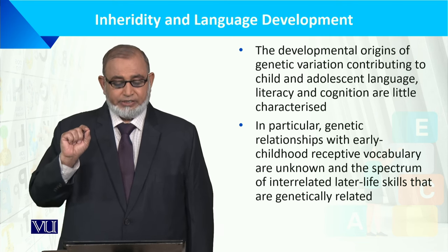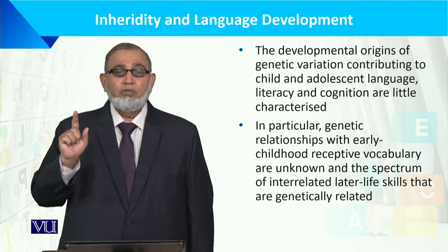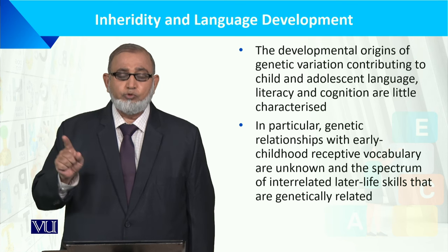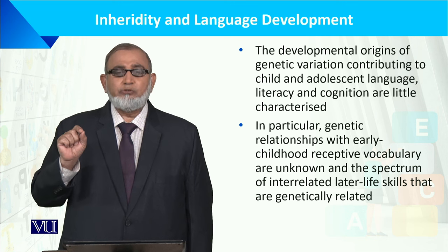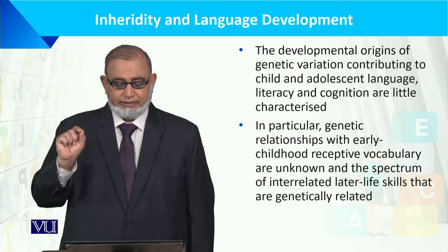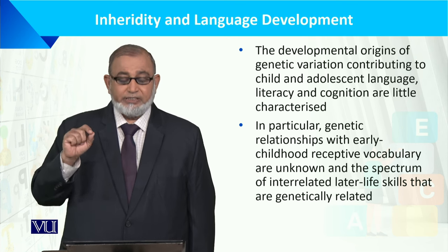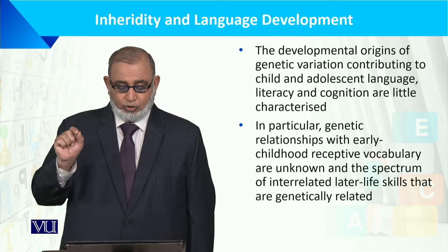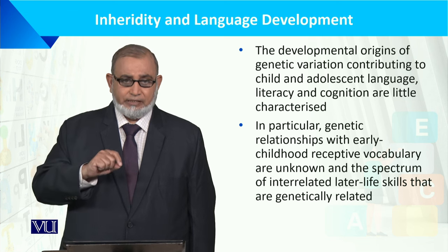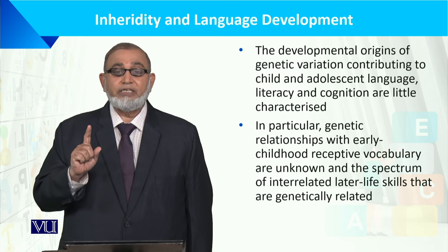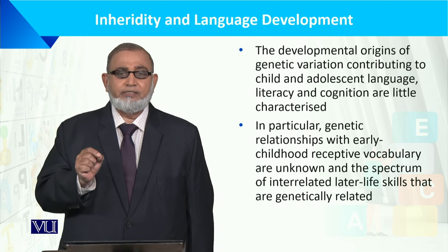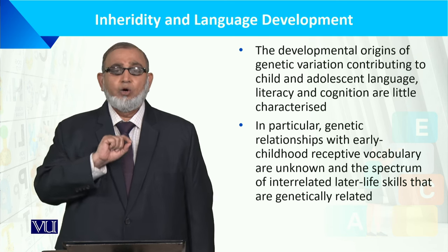یہ جو developmental origins ہے، genetics کا یہ variation بچے کی early childhood سے لے کر mid-adolescence تک contribute کرتی ہے۔ جوں جوں بچہ age میں بڑھتا ہے اس کا role کم یا زیادہ ہو سکتا ہے۔ genetic relationship کی وجہ سے early childhood receptive vocabulary بہتر ہوتی ہے۔ cognition، language اور life skills یہ سب genetically related ہیں — ان کے درمیان ایک relationship ہے۔ والدین کی طرف سے بچوں کو جو inherited characteristics ملتے ہیں، ان کا اہم role ہوتا ہے۔